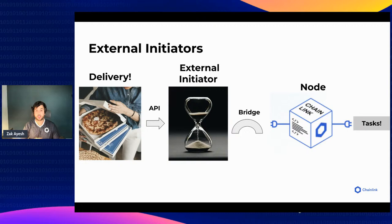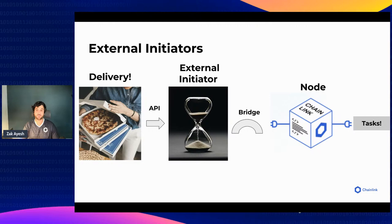External initiators are used in conjunction with the webhook initiator to allow your jobs to activate under any arbitrary conditions. You can program and customize an external initiator to send an HTTP request to your Chainlink node under any condition — for example, scanning a pizza store's API and once a specific pizza is delivered, communicating with the node to start a job and post data onto the blockchain. Initiators talk to nodes via a bridge.